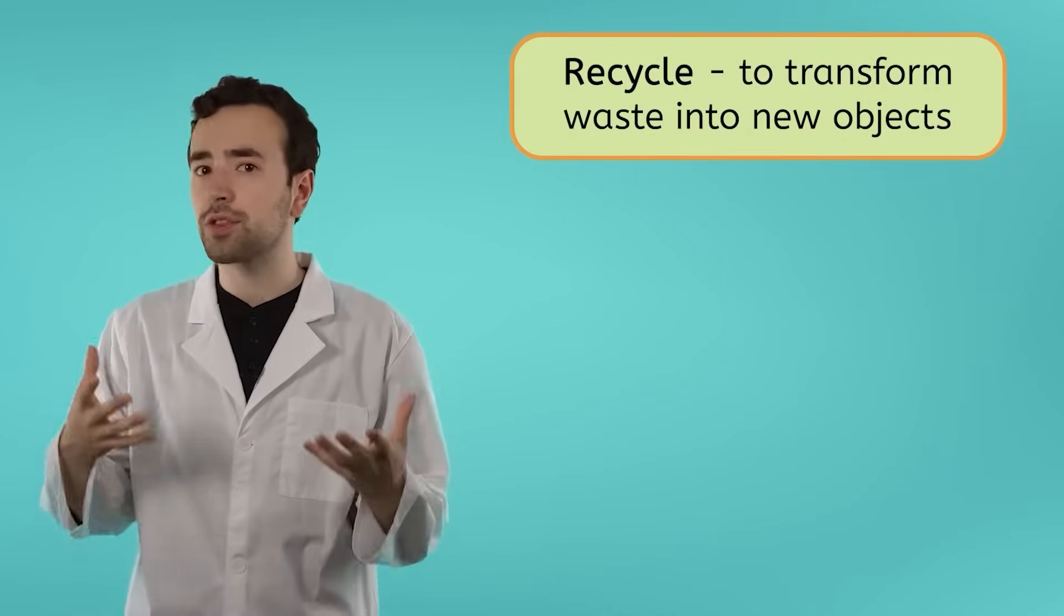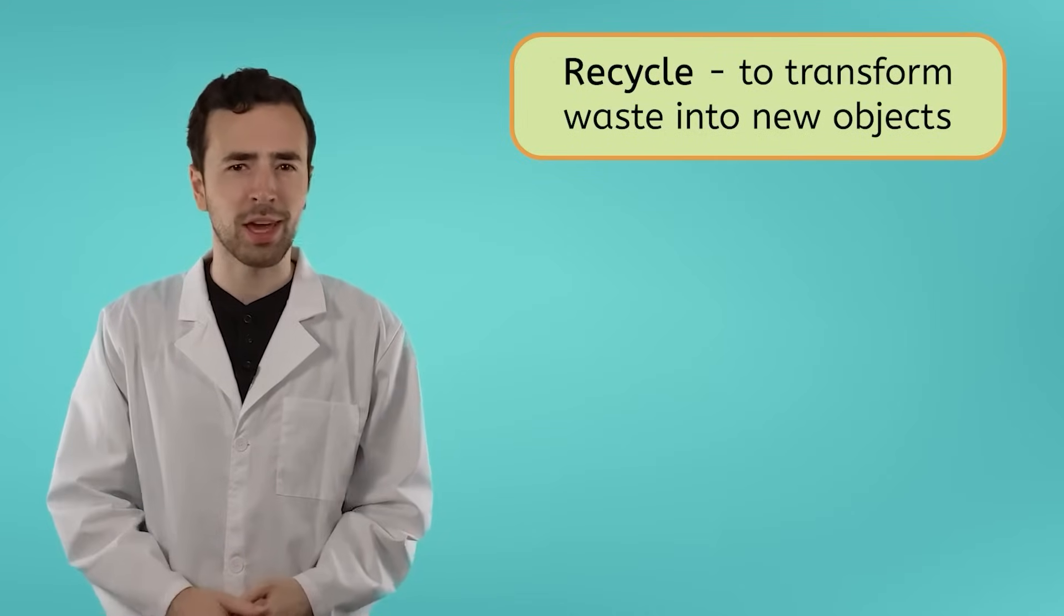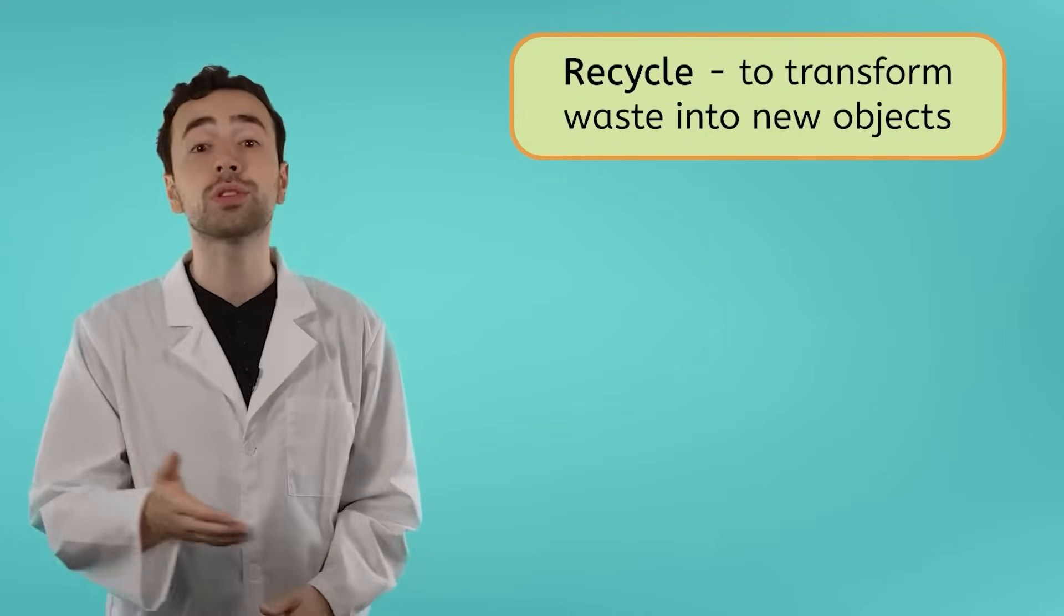The last of the three R's is recycling. The most effective ways to protect the environment and prevent waste are to reduce and reuse anything you can before finally recycling. To learn more about why that is, let's take a deeper look at how recycling works. To recycle means to transform waste into new objects. Let's see what this looks like by following the journey of a used soda can.